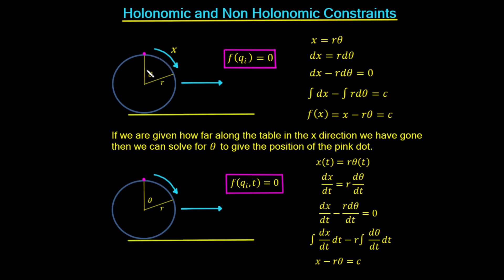If we take the radius of the disc as r and the angle through which the disc rolls as theta, then the arc generated — given by x — is simply x = r·θ, assuming theta is in radians. We can rewrite this in terms of infinitesimals: dx, a small displacement in the x direction, equals r times a small angular displacement dθ. Taking everything to one side gives dx − r·dθ = 0.